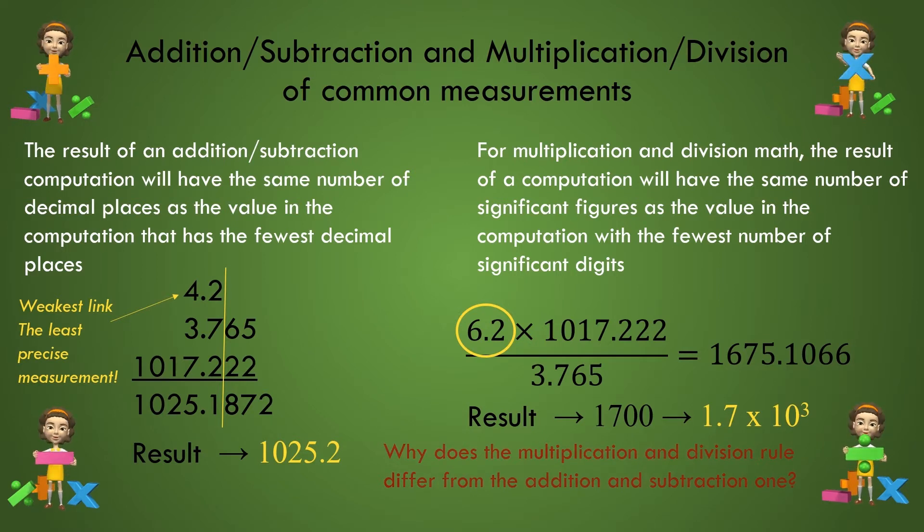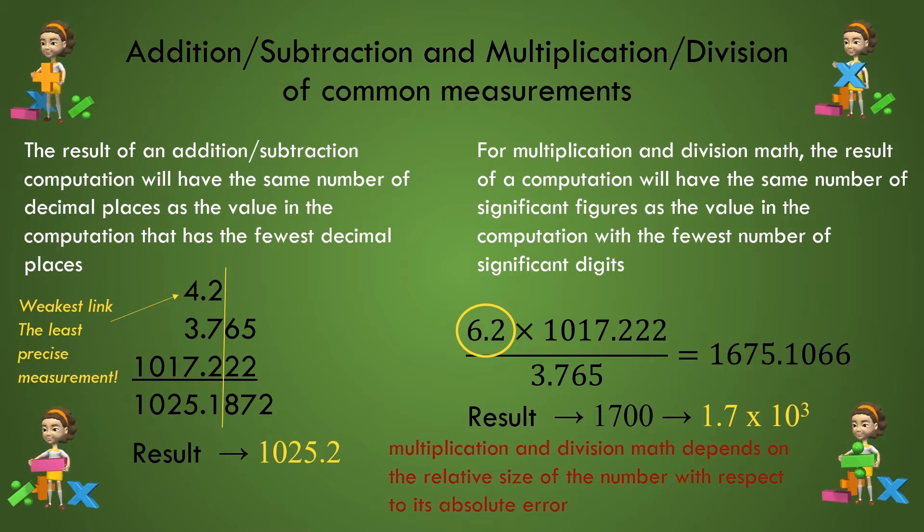Unlike addition and subtraction, the measurement math of multiplication and division depends on the relative size of the number with respect to its absolute error.